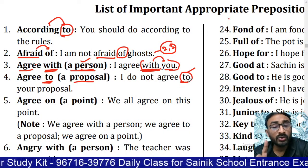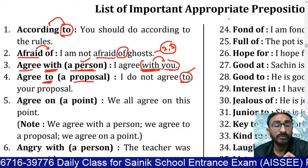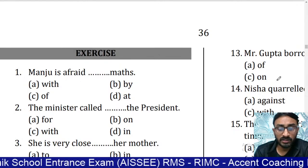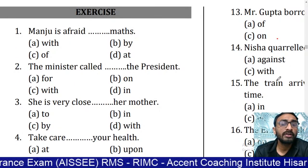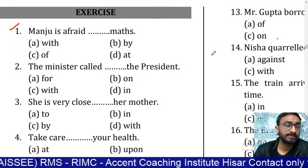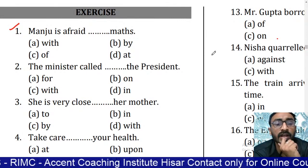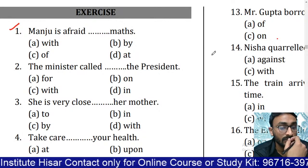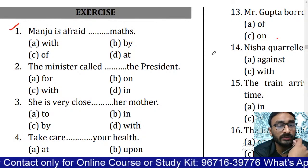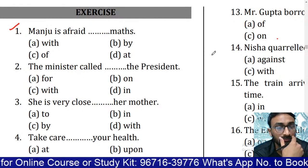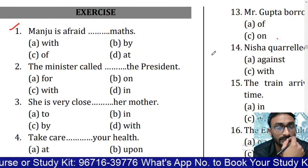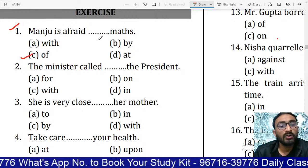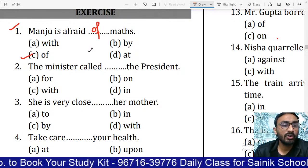We have completed four words so far. Now I am going to give examples from previous year exams. 'Manju is afraid dash maths' — what is the right answer? The answer is 'of' — 'afraid of maths.' Manju is afraid of maths.